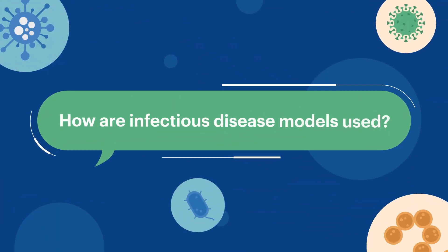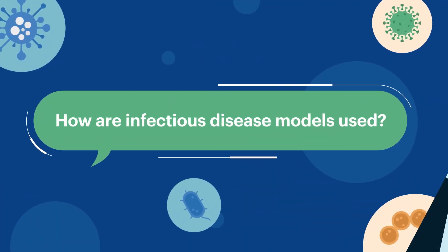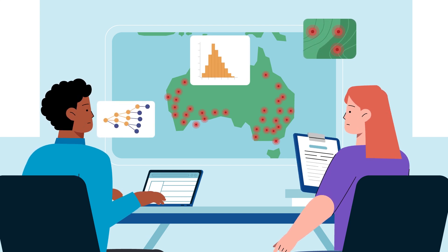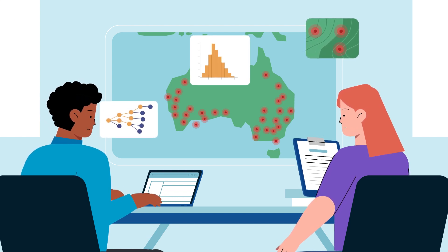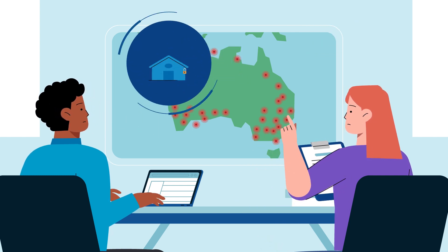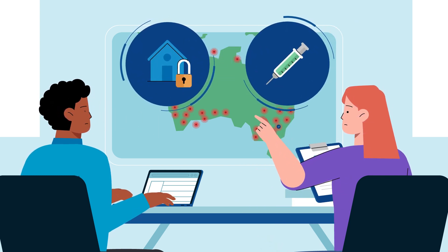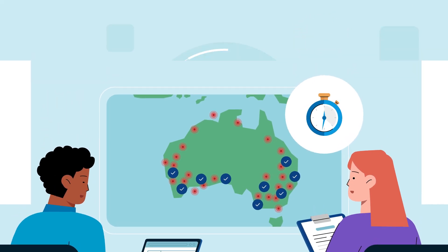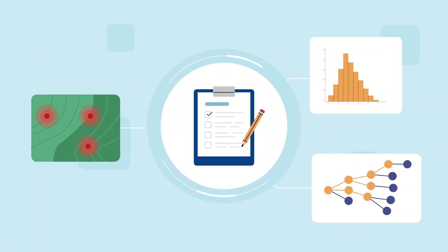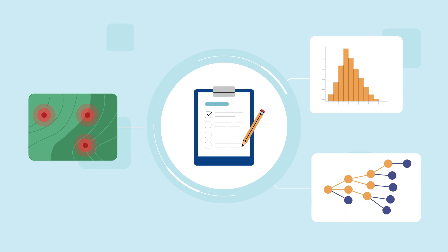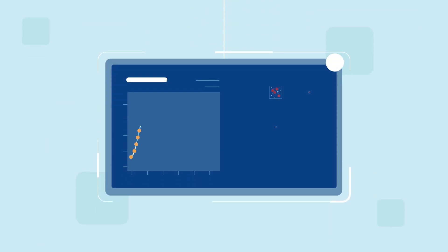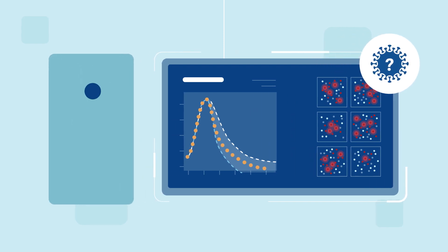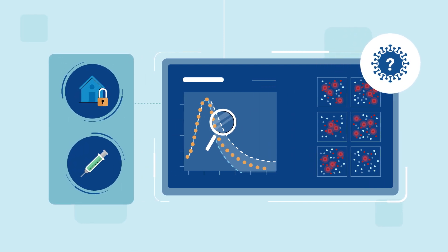Infectious disease models can be used during an outbreak to project what might happen in the very near future and to see how different control measures like quarantine and vaccination might cut down the length of time that an outbreak lasts. Alternatively, they can be used before an outbreak happens to help us plan a response by simulating what might happen in a future outbreak of an unknown disease and identifying the best control measures to implement.